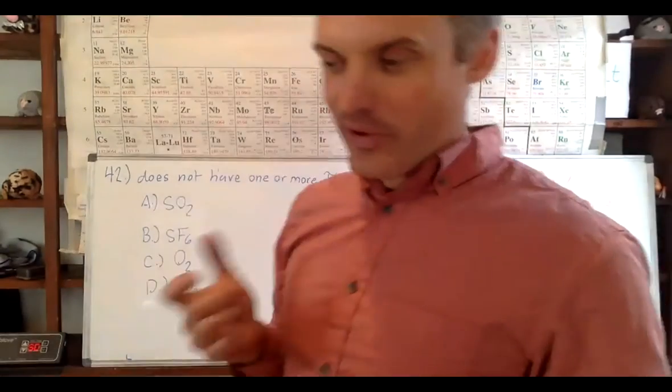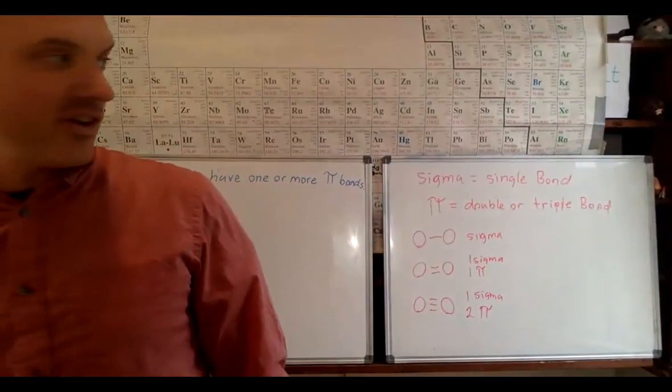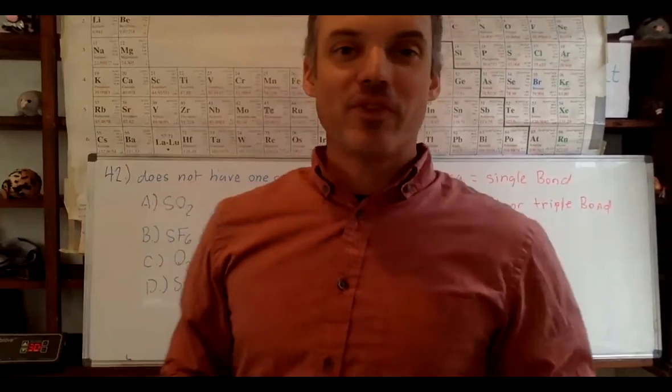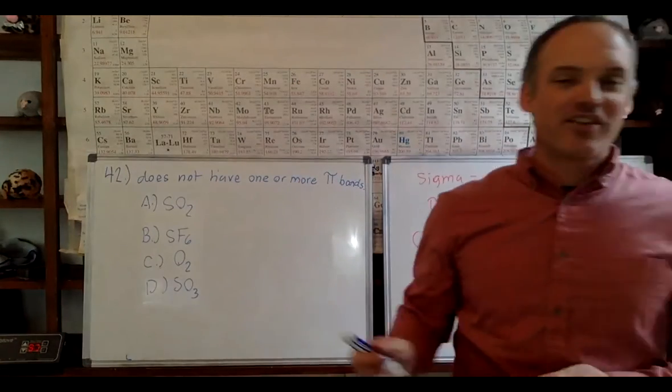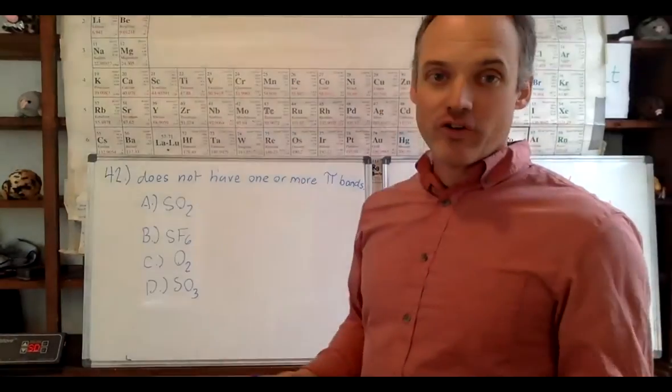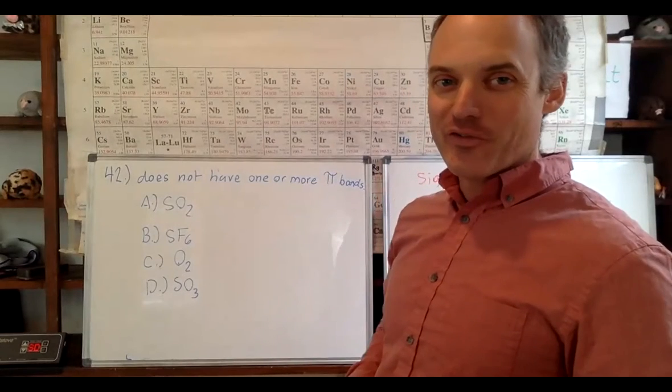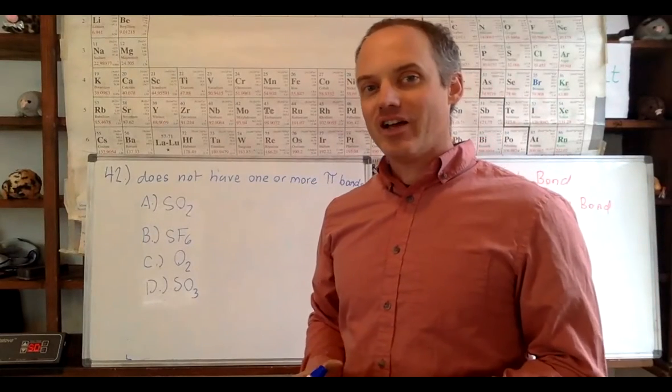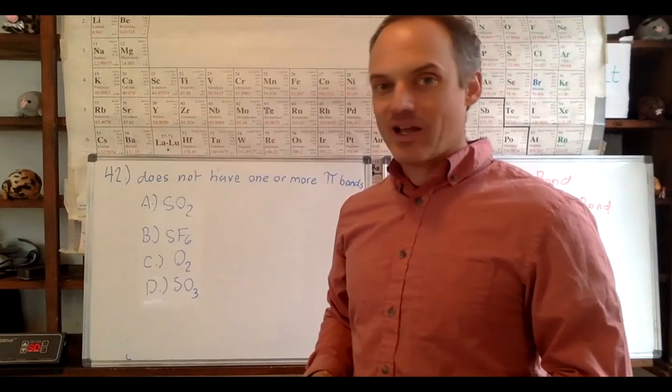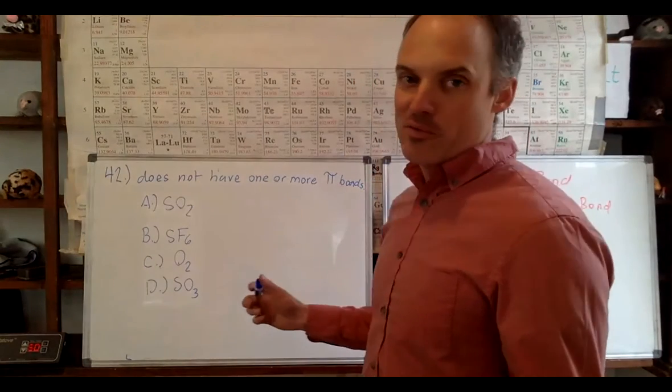All right, so let's look at these. In order to figure this out, these questions are kind of hard. In order to figure these out what you have to do is look at what their structure is. You have to figure out what their bonding structure looks like and from that determine if it's going to have a pi bond or not, because it has to have a double bond in order for that to happen.